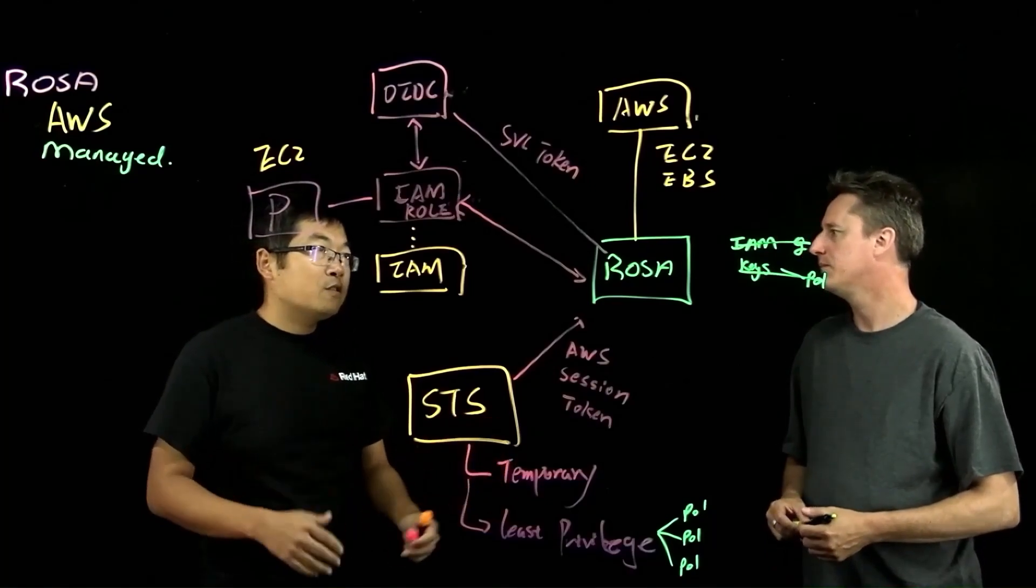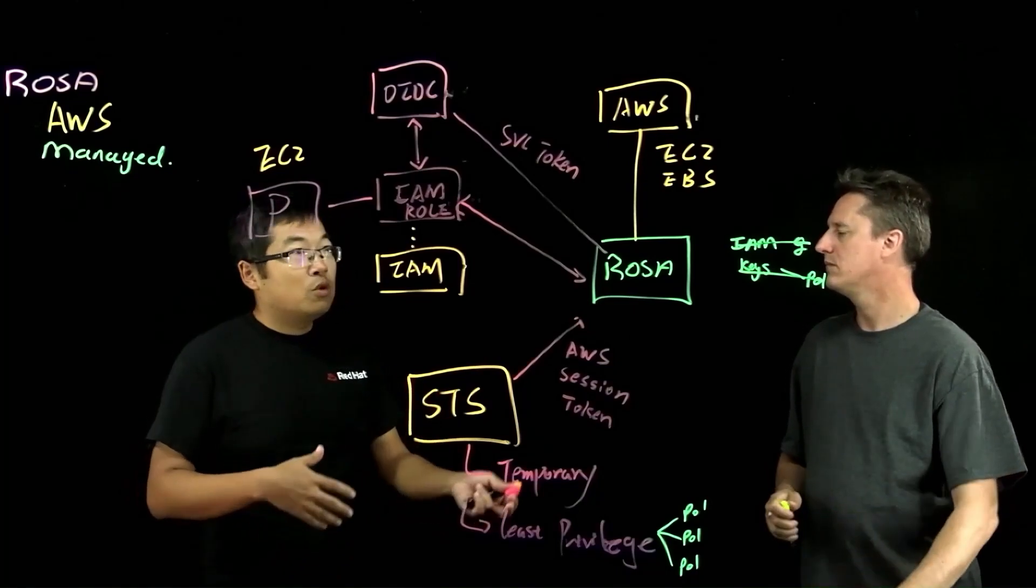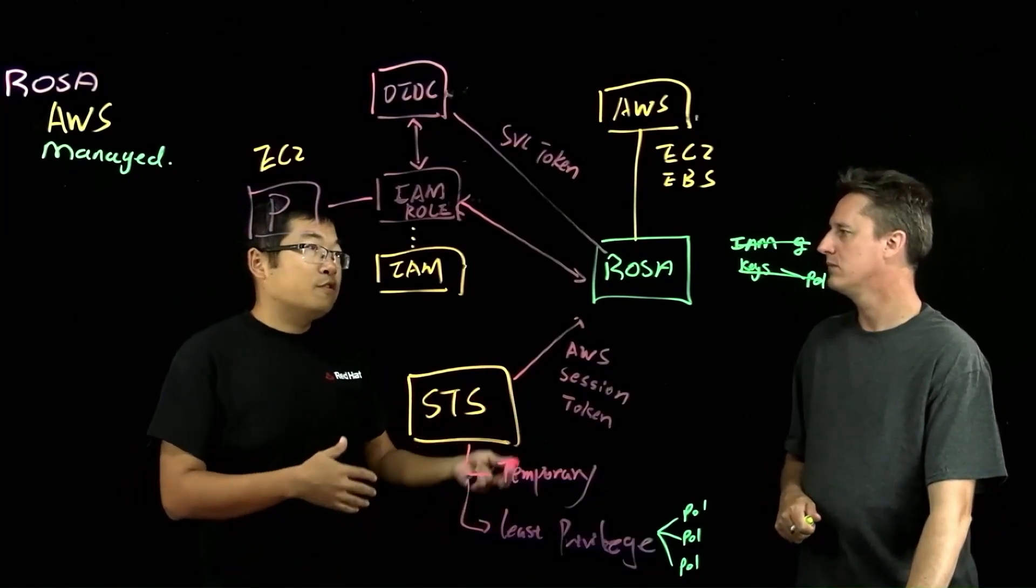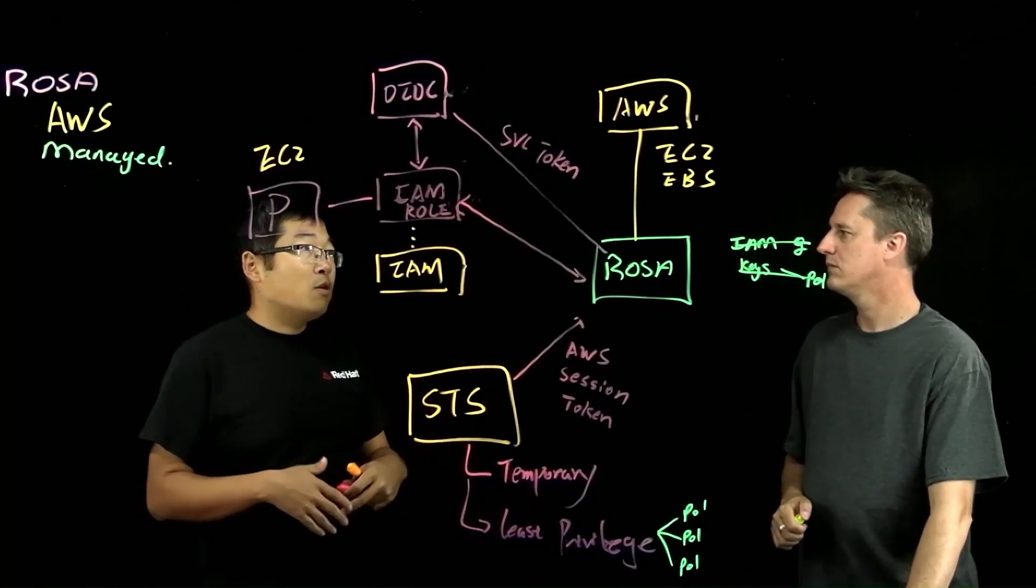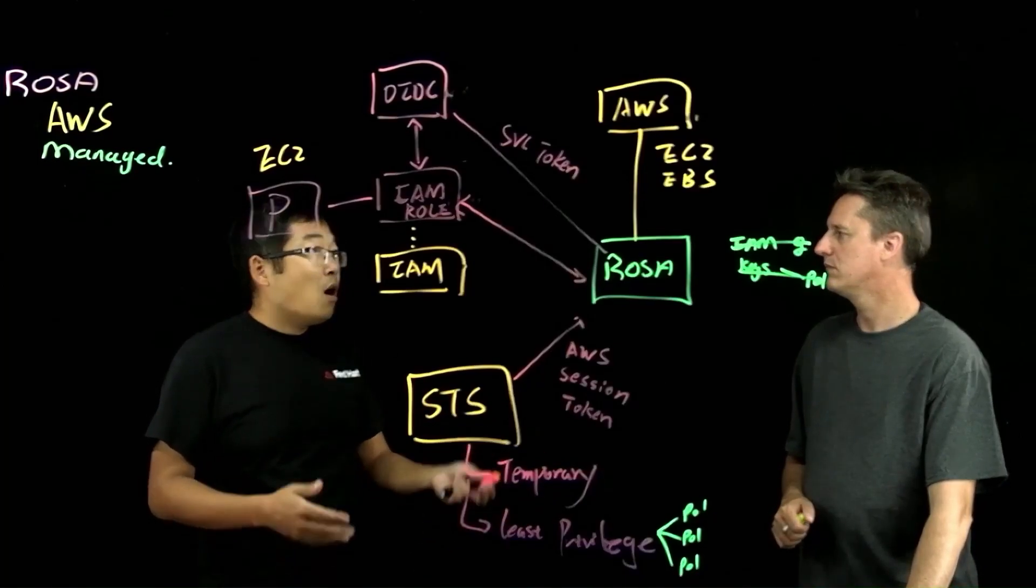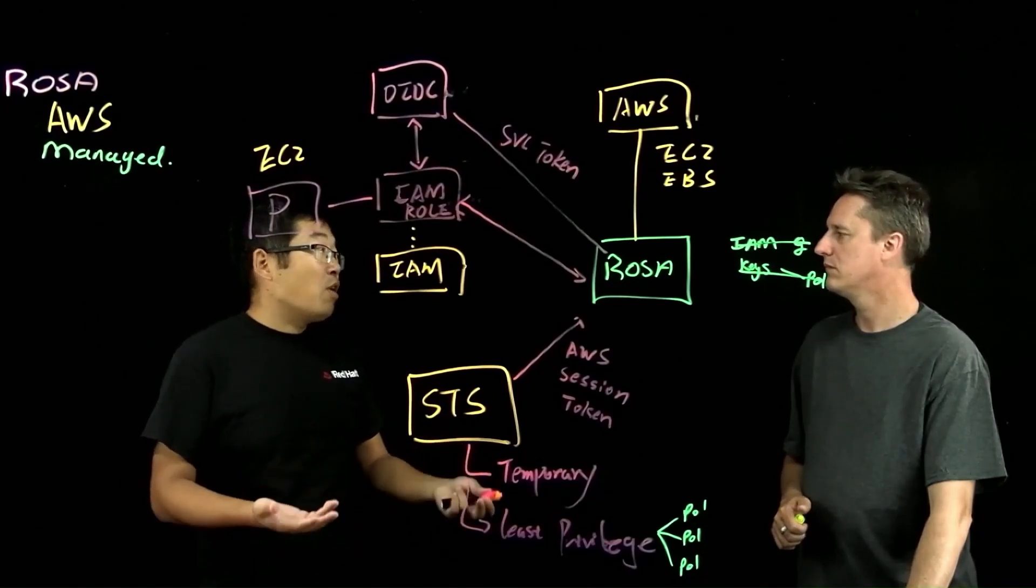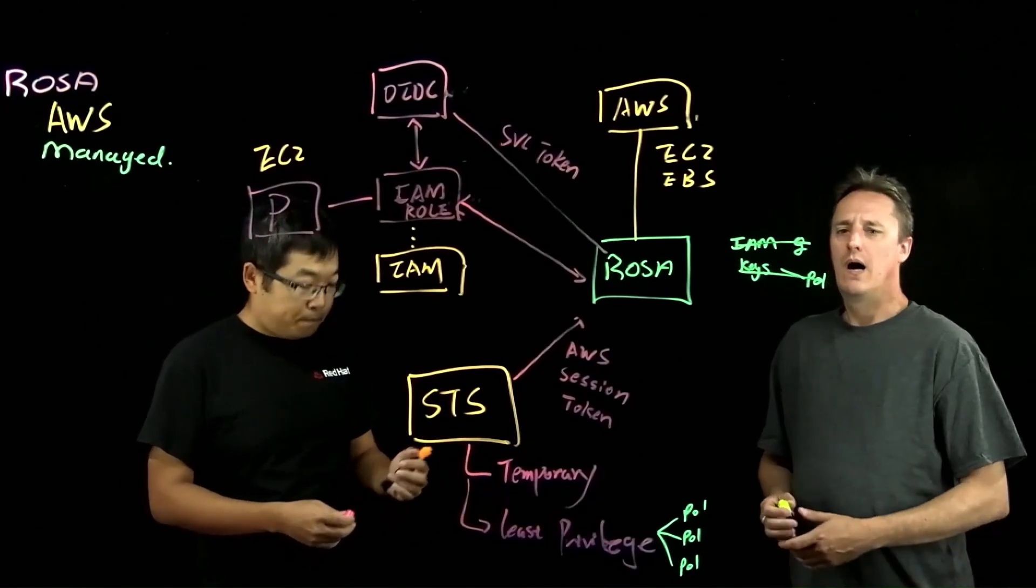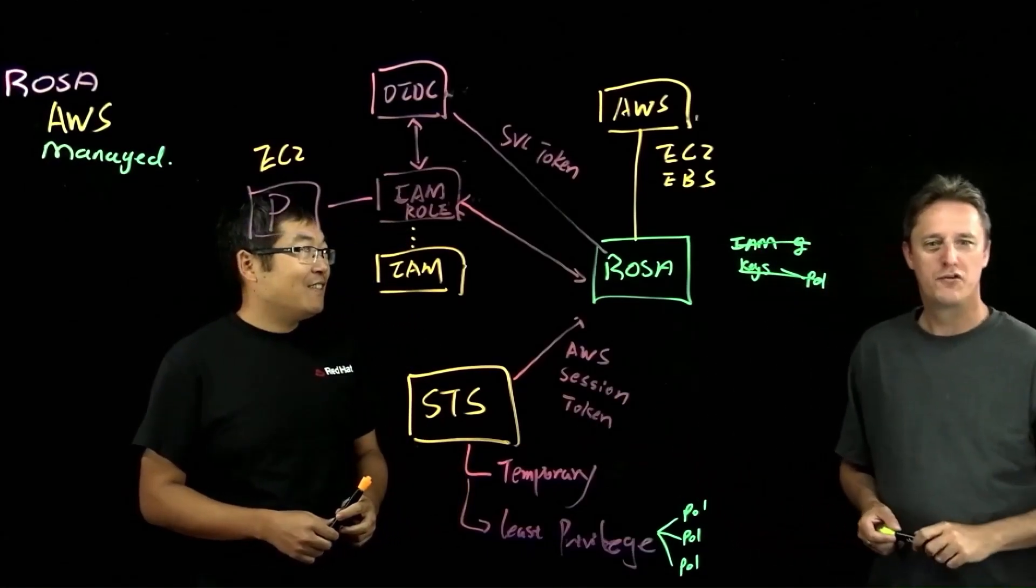So STS is an enhanced security feature for authentication between all the operators or services inside of ROSA to AWS. In the next session, we can talk about what is Private Link, how are we going to make sure the network is secured in the private network. Thank you very much for joining me. It's always a pleasure. And thank you for joining us.